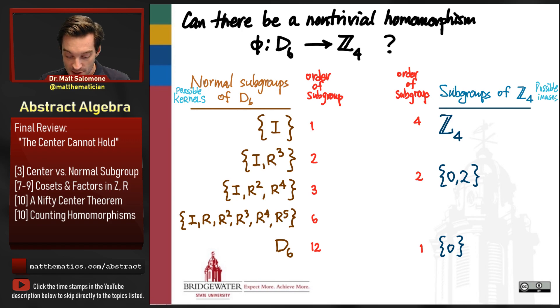And then for each of my normal subgroups, I want to find what the order of the factor group by that normal subgroup would be, which again, Lagrange's theorem tells us is just equal to the index of these normal subgroups inside of D6, and therefore it's equal to the quotient of the order of D6 divided by the order of my subgroup. So 12 divided by 1, 12 divided by 2, 12 divided by 3, by 6, by 12. Here are the orders of my factor groups.